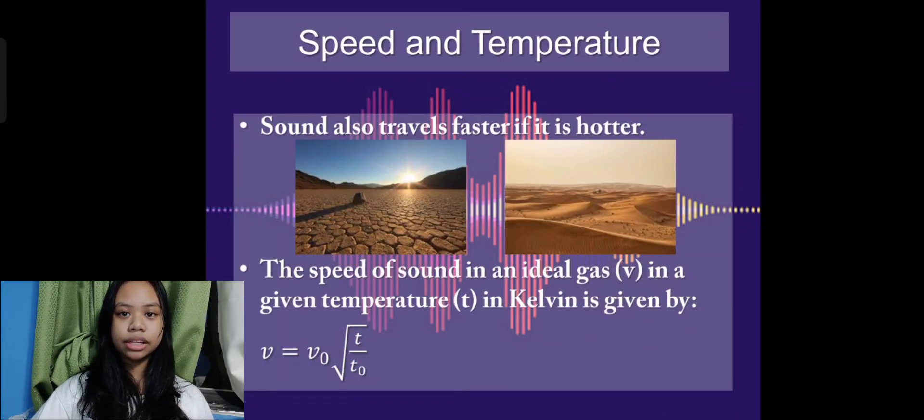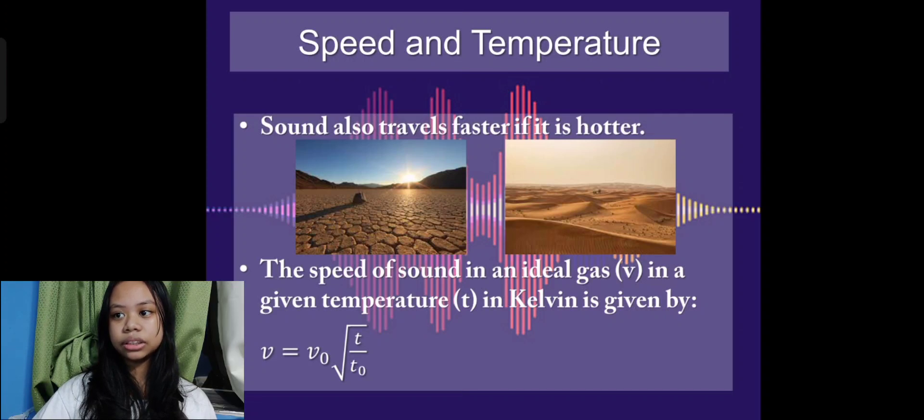Sound also travels faster if it's hotter. As a substance heats up, its molecules move faster, so they collide more frequently. The more frequently they collide, the faster the speed of sound in the material. The speed of sound in an ideal gas at a given temperature in Kelvin is given by the formula: speed of sound is equal to the initial speed at absolute temperature times the square root of temperature over the initial or absolute temperature.